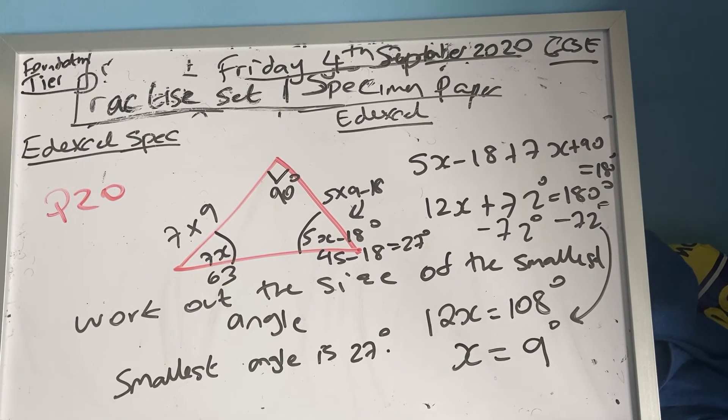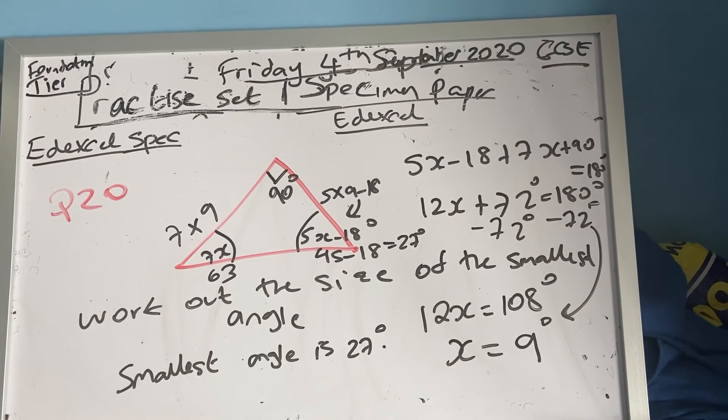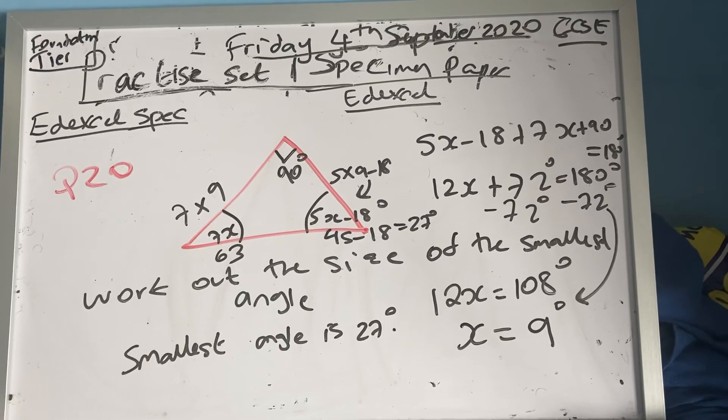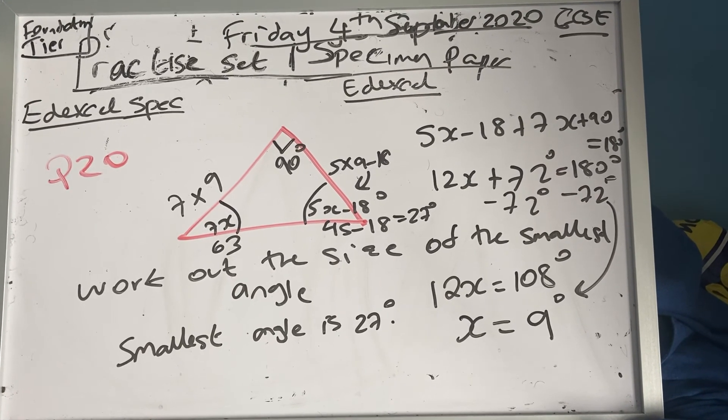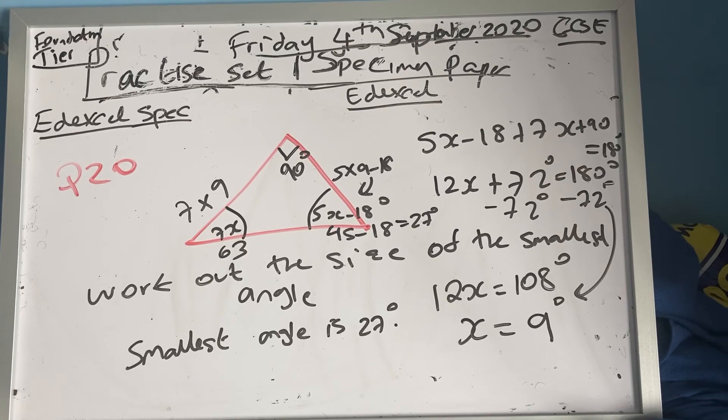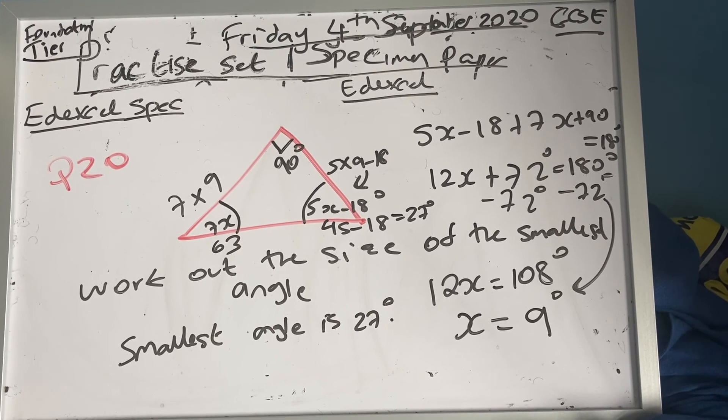18 is 27, so 27 degrees. That is my smallest angle guys. I hope it made sense. Any questions or queries, put it in the comment section. Thanks for watching.